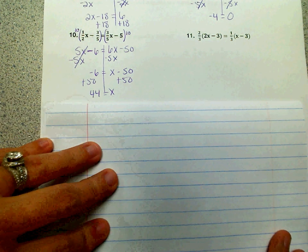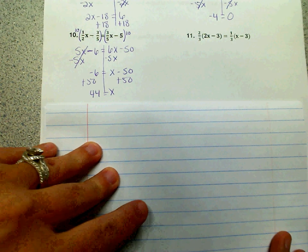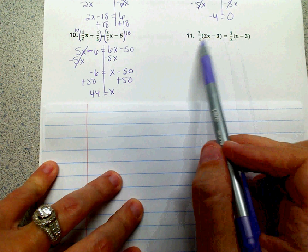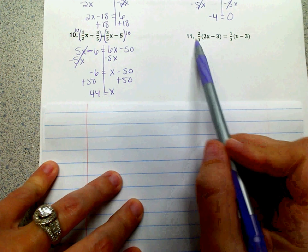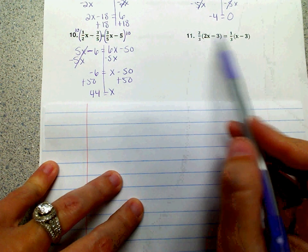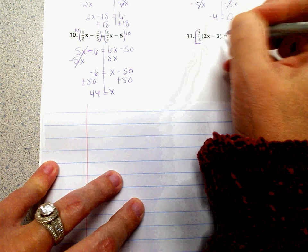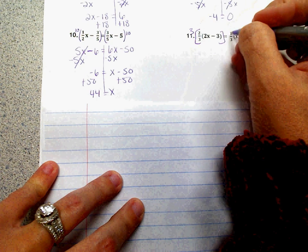Number 11, we have fractions again. And same thing here. Take your fraction of your denominator, or take the denominator, and if they're different, multiply them together. Here they're the same, so it's just 3. So we're going to multiply both sides by 3. Multiply this side by 3, and this side by 3.